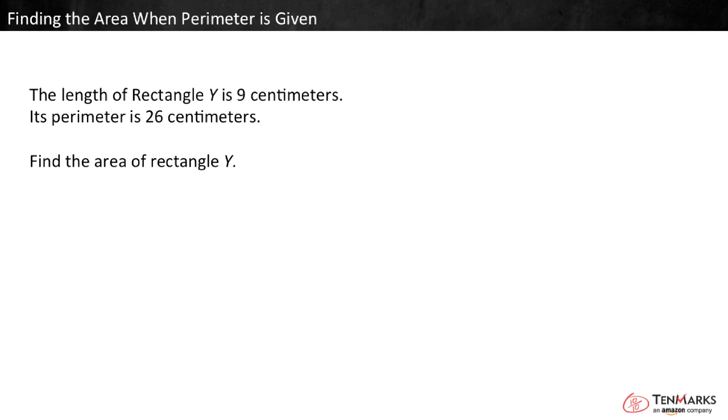With area and perimeter problems, it can be helpful to start by drawing a model and labeling it with the information we know. Here's rectangle Y. We know its perimeter is 26 centimeters and one of its side lengths is 9 centimeters.